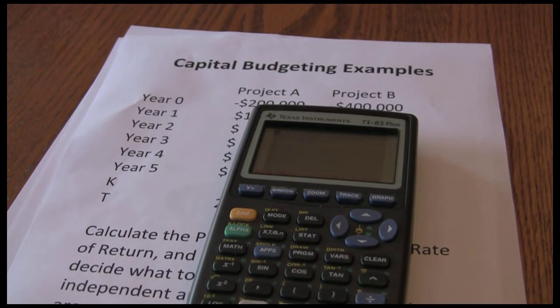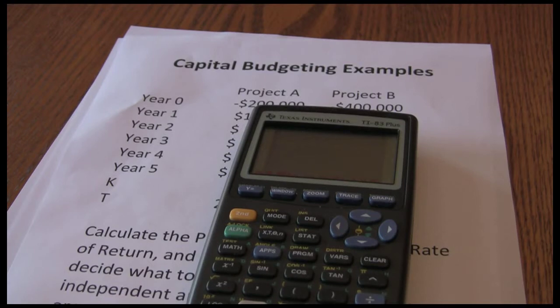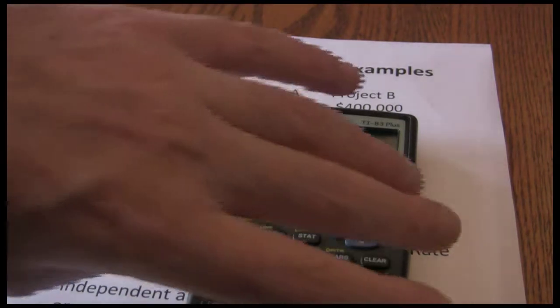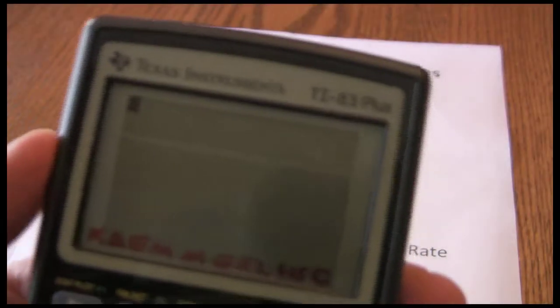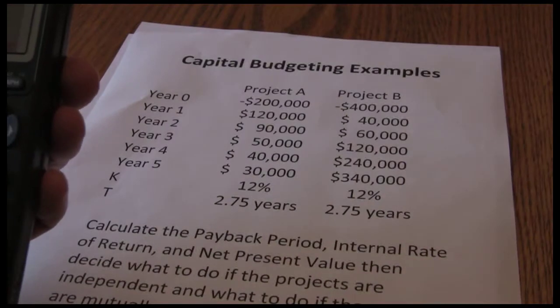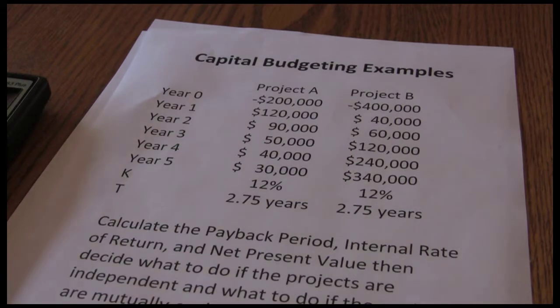Now we want to calculate our net present value and internal rate of return for these capital budgeting projects. In this example we're going to be using the TI-83. Remember if you have a TI-83 or TI-84 the procedure is the same. So we want to calculate the net present value and internal rate of return. We're going to start with the internal rate of return on this calculation.